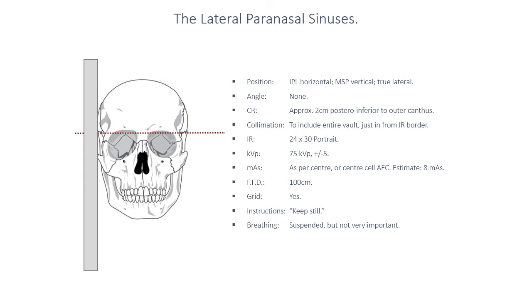A lateral paranasal sinus projection requires the cranial vault to be in a true lateral position. Since the shoulders can be challenging to get out of the way, it may be worthwhile to have the patient at approximately 45 degrees toward the image receptor for the thorax and abdomen, and then turn the head into a true lateral position. Giving the patient gentle encouragement at the base of their neck and shoulders can help. When positioning, check the true lateral position by standing eye level to eye level in front of the patient to confirm the interpupillary line is horizontal with no head tilt.